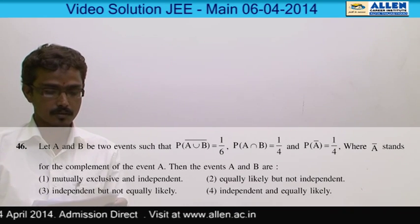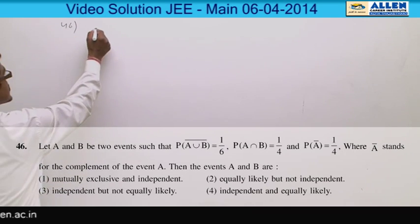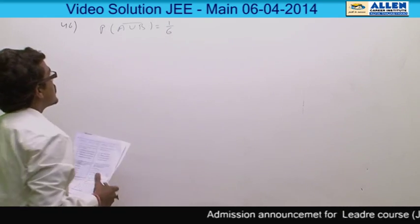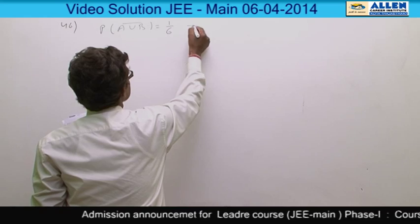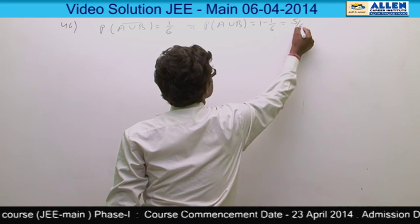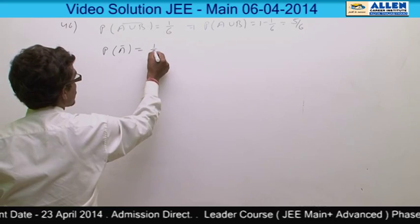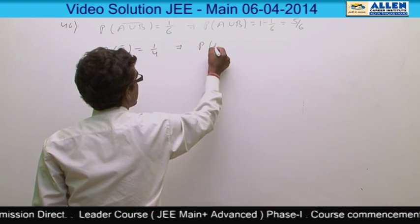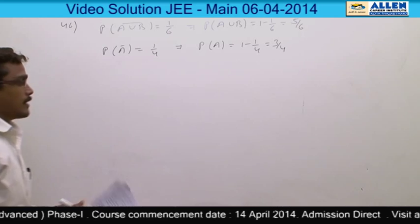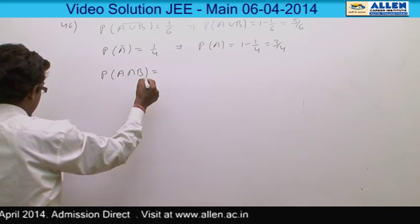Question 46 is based on probability. The given data: P(complement of A∪B) = 1/6, which implies P(A∪B) = 1 - 1/6 = 5/6. Also given: P(A∩B̄) = 1/4 and P(A∩B) = 1/4.